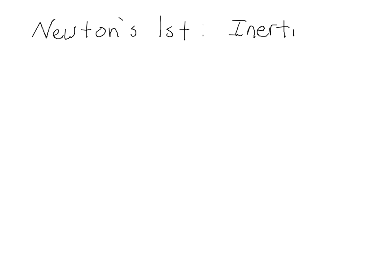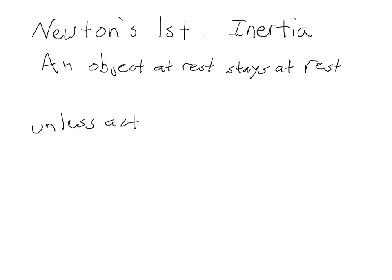It says that an object at rest will stay at rest, and an object in motion will stay in motion with the same speed and direction, unless it's acted on by an outside force. So let's write that out and look at each term. An object at rest stays at rest, unless acted on by a net outside force.